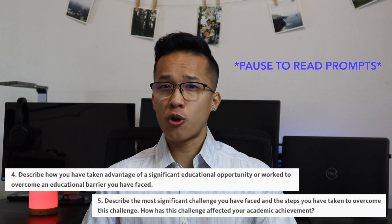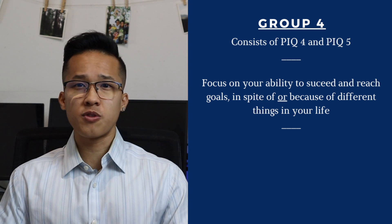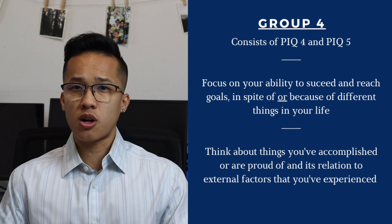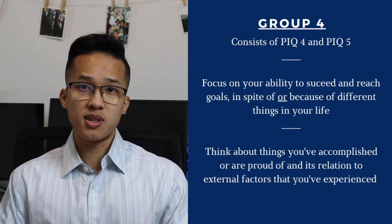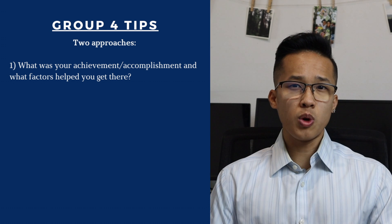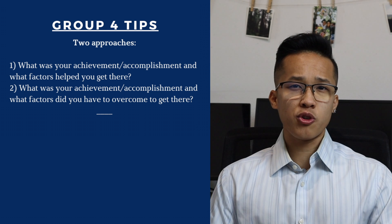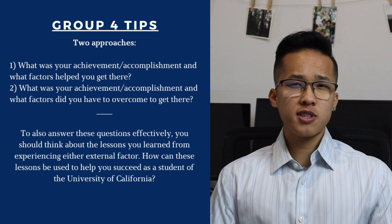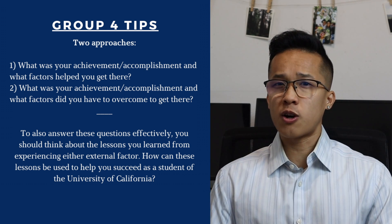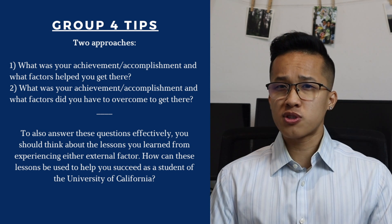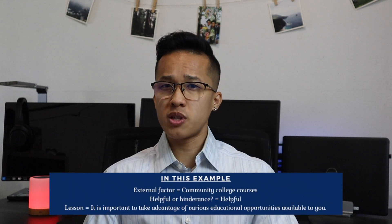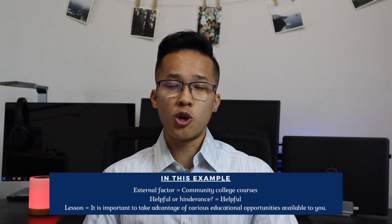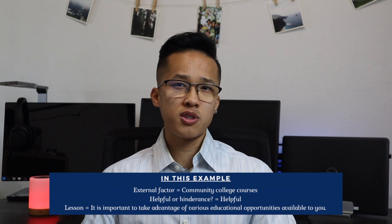The very last group includes PIQ number four and PIQ number five. This group is pretty similar to group number three; however, it's a little more focused on your ability to succeed because of and in spite of different things in your life. You still want to think about accomplishments and achievements, but you also really want to focus on external factors as well. You can answer this in two ways: first, what was your accomplishment and what helped you get there? Or second, what was your achievement and what challenges did you have to overcome to receive it? Think about what lessons you learned and how they will benefit you once you're a college student. For example, if you wanted to be a computer science student but your high school didn't provide those classes, and instead you took computer science at your local community college — the external factor is the community college classes, and the lesson learned is going above and beyond what's in front of you.